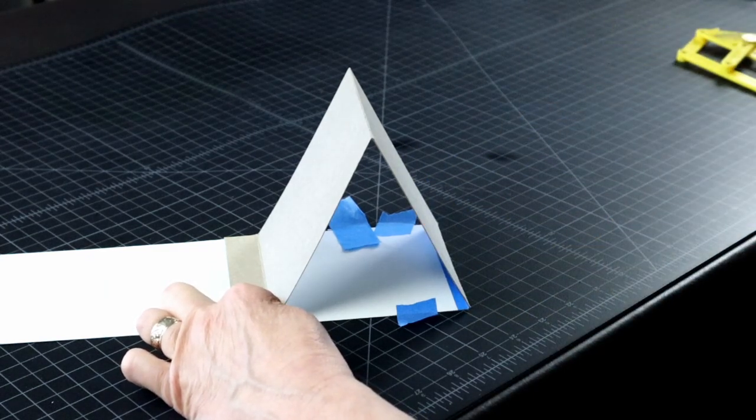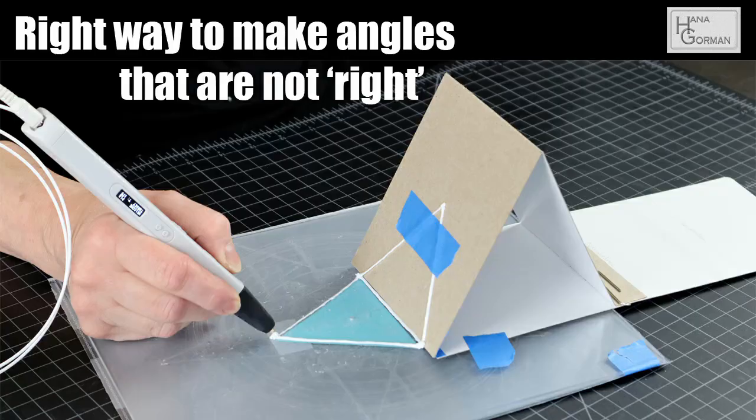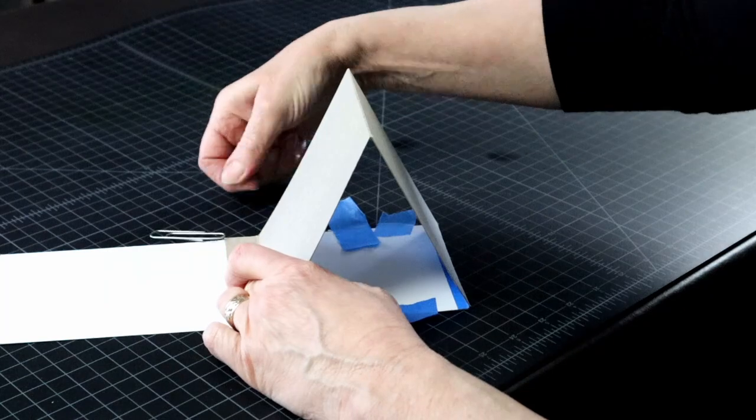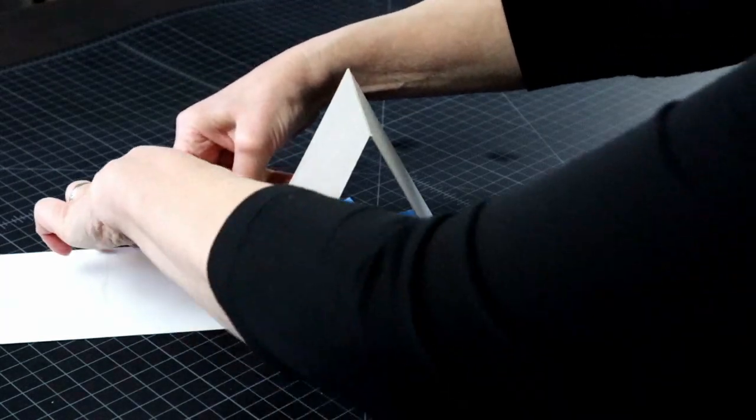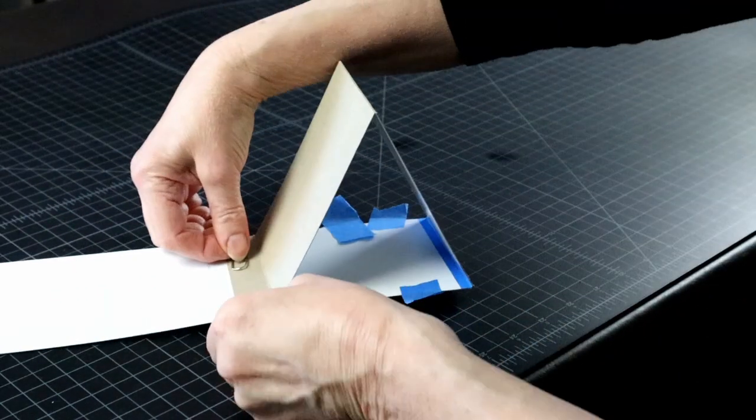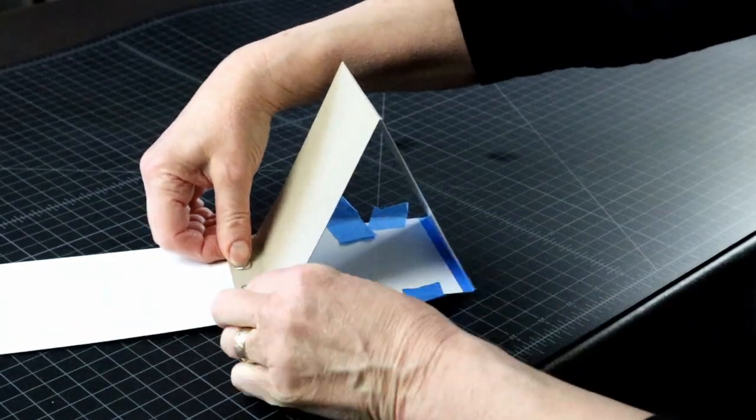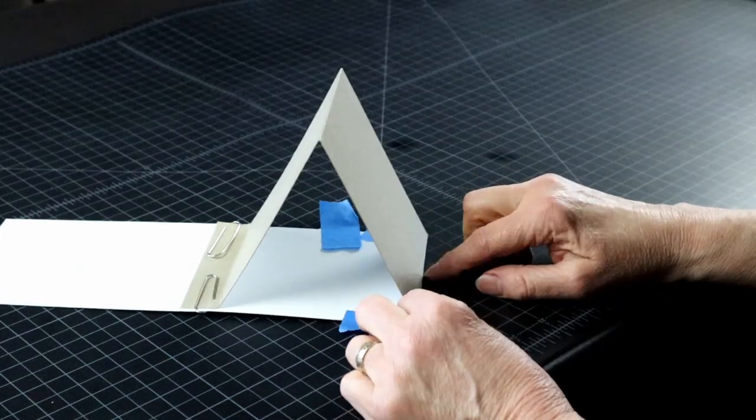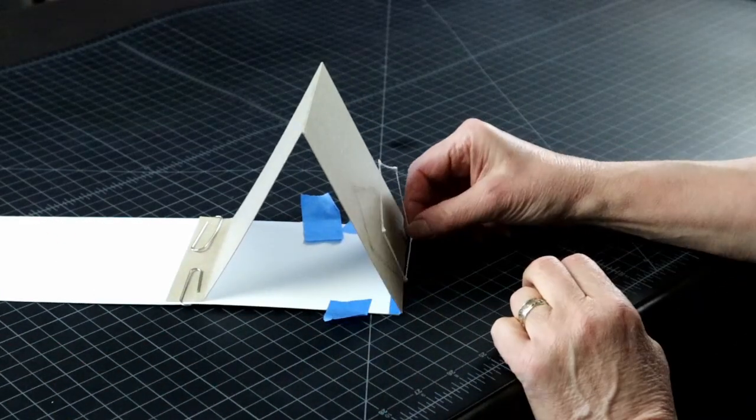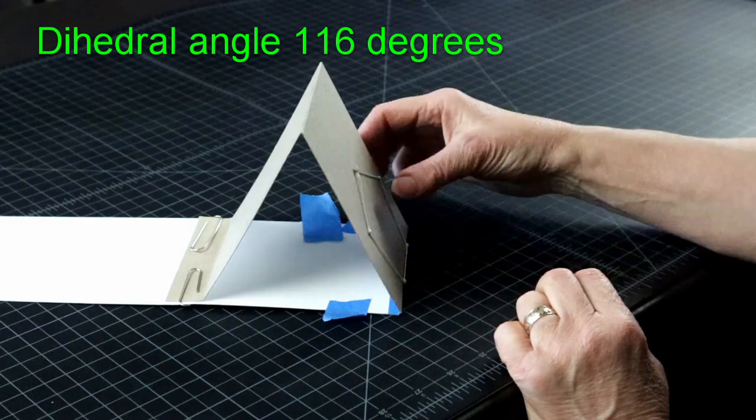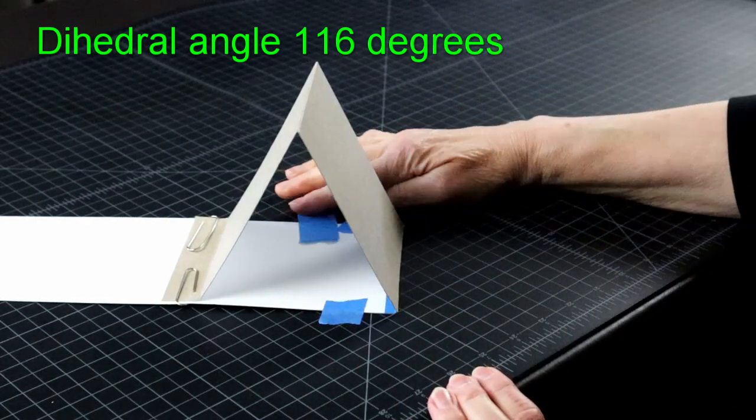By the way, the video on how to make this angle jig contraption is in the description if you missed the angle making episode. Lock the angle in with a couple of paper clips. And here we will put our first pentagon and continue with the second one at the 116 degree angle onto the work surface. Now that the most important part is set, we can continue on to make our pattern.